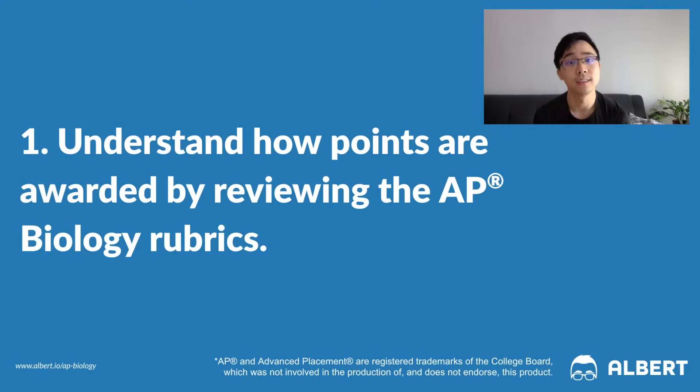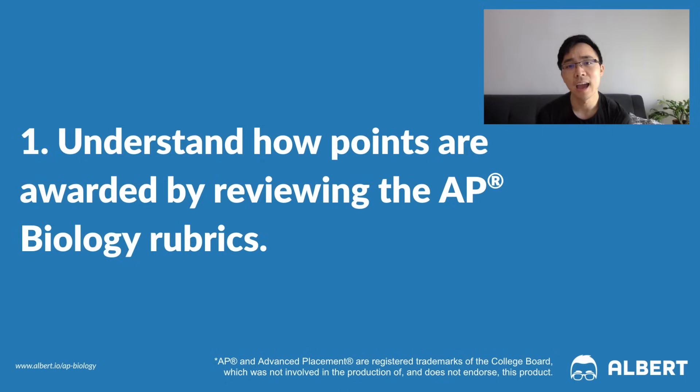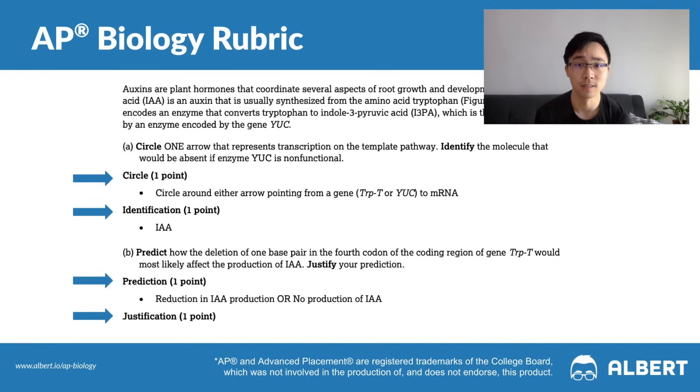Let's get started. The first step when it comes to writing effective AP Biology free response questions is to understand and master the rubric. The easiest way to do this is to visit the College Board's past released exam site. They're going to provide breakdowns of all the scoring guidelines in the past few years, so you'll be able to see how points were allocated in certain problems, as you can see in this example displayed on the screen.